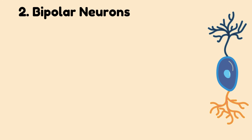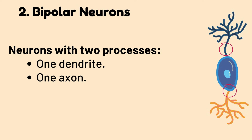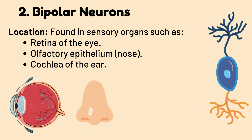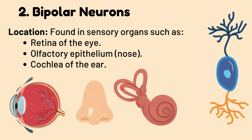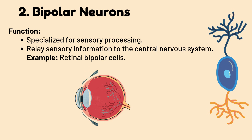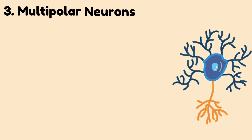Unipolar neurons are primarily sensory neurons that transmit signals from the periphery to the spinal cord — for example, dorsal root ganglion cells. Number two: bipolar neurons — neurons with two processes: one dendrite and one axon. They are found in sensory organs such as the retina of the eye, olfactory epithelium of the nose, and cochlea of the ear. These are specialized for sensory processing and relay sensory information to the central nervous system — for example, retinal bipolar cells.